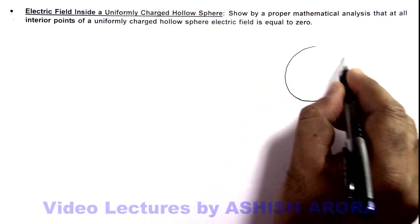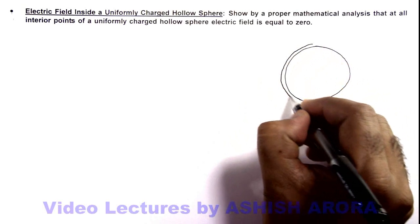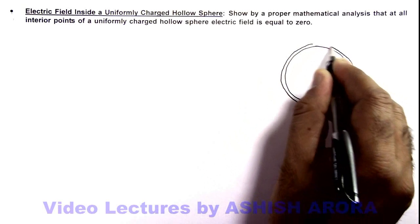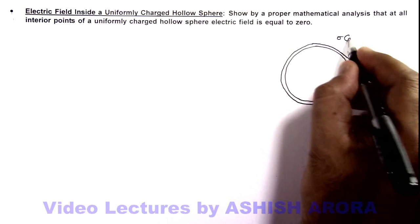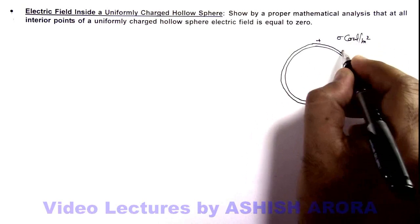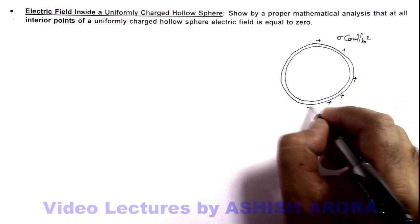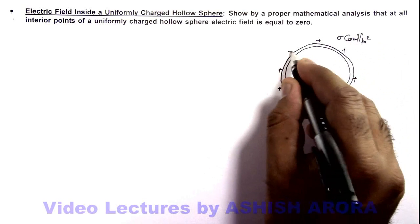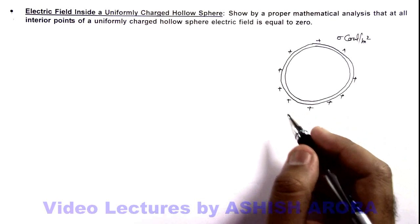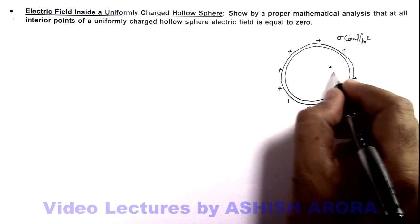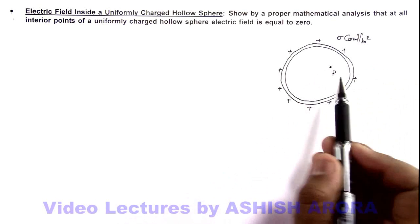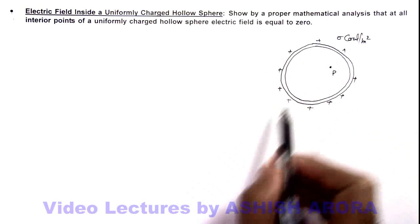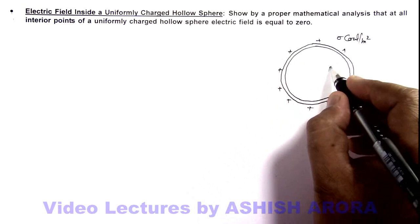Now here, if we draw a picture of a hollow sphere shown like this, and say it is completely charged at sigma coulombs per meter square uniformly on its surface, and we wish to calculate the electric field at interior points of this sphere. For this situation we consider a point P which is off-center from the center of this sphere, as we can directly state that at the center of the sphere by symmetry the electric field is zero.